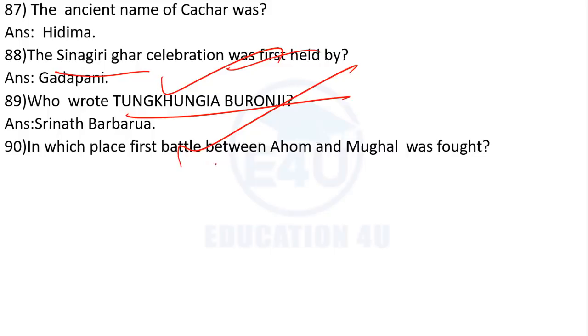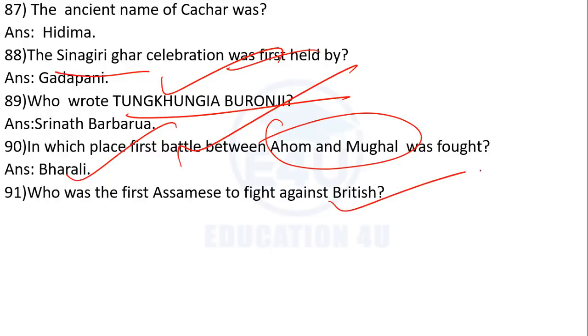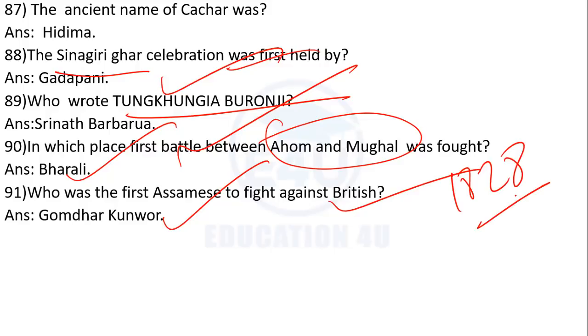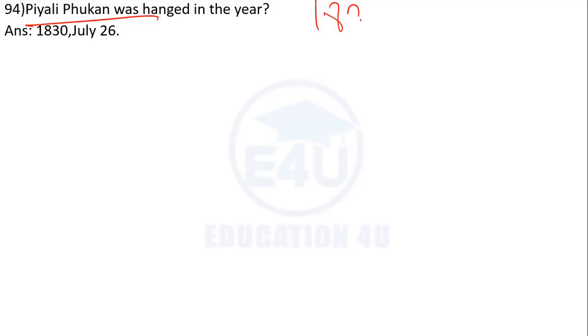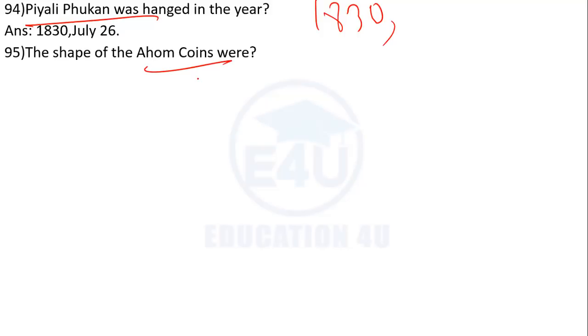In which place was the first battle between the Ahom and Mughal fought? Who was the first person to fight against the British? The Lidl temple of Assam was first built in 1828. The place of Miami was last used in 1875. There was also a notable event in 1923.